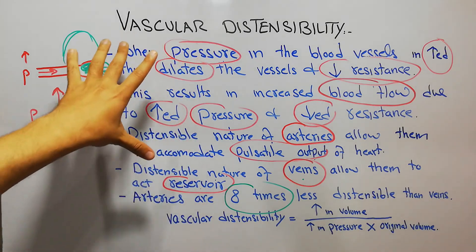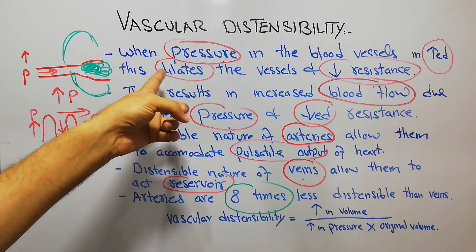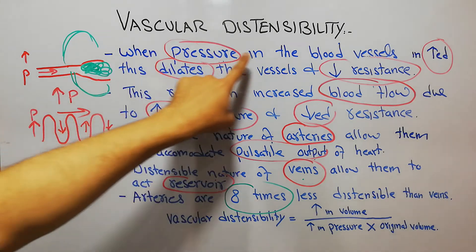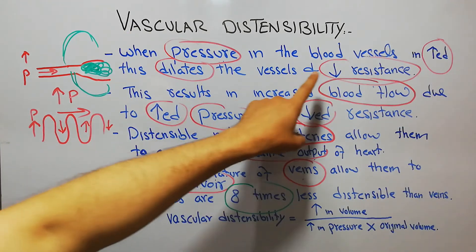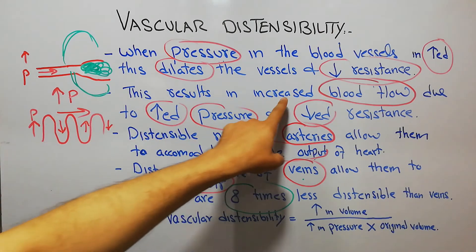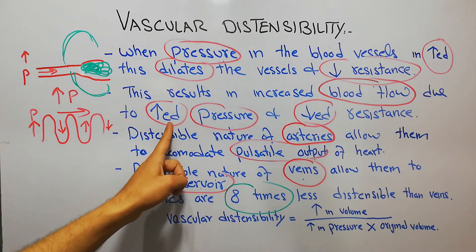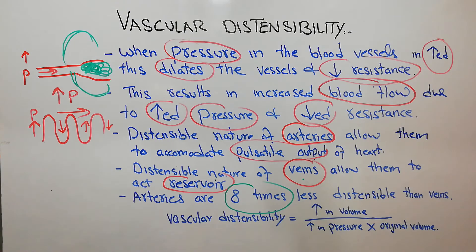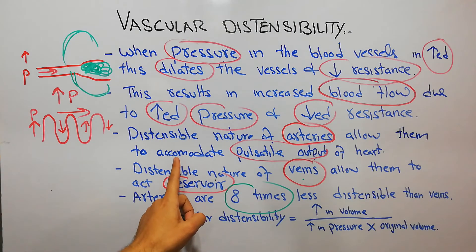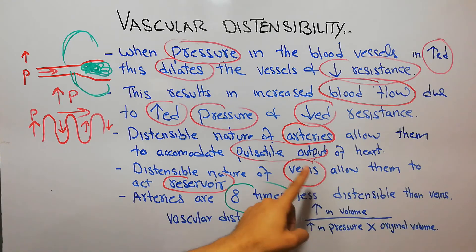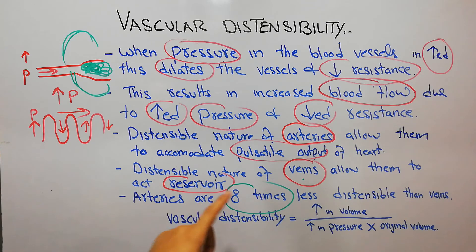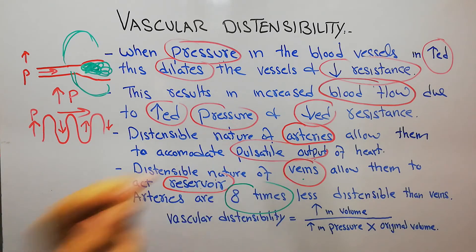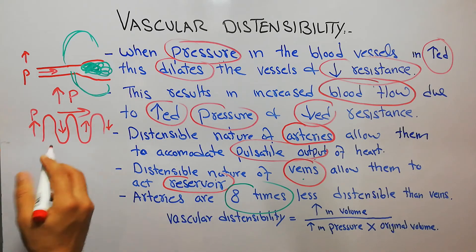To summarize: vascular distensibility is the ability of vessels to dilate. When pressure in the blood vessels increases, it dilates the vessel and decreases resistance, helping increased blood flow through two mechanisms — increased pressure and decreased resistance. This distensibility serves two different functions: in arteries it allows accommodation of the pulsatile output of the heart, and in veins it allows them to act as a reservoir of blood. Veins are more distensible and can accumulate eight times more blood than arteries, because the wall of the arteries is thicker.